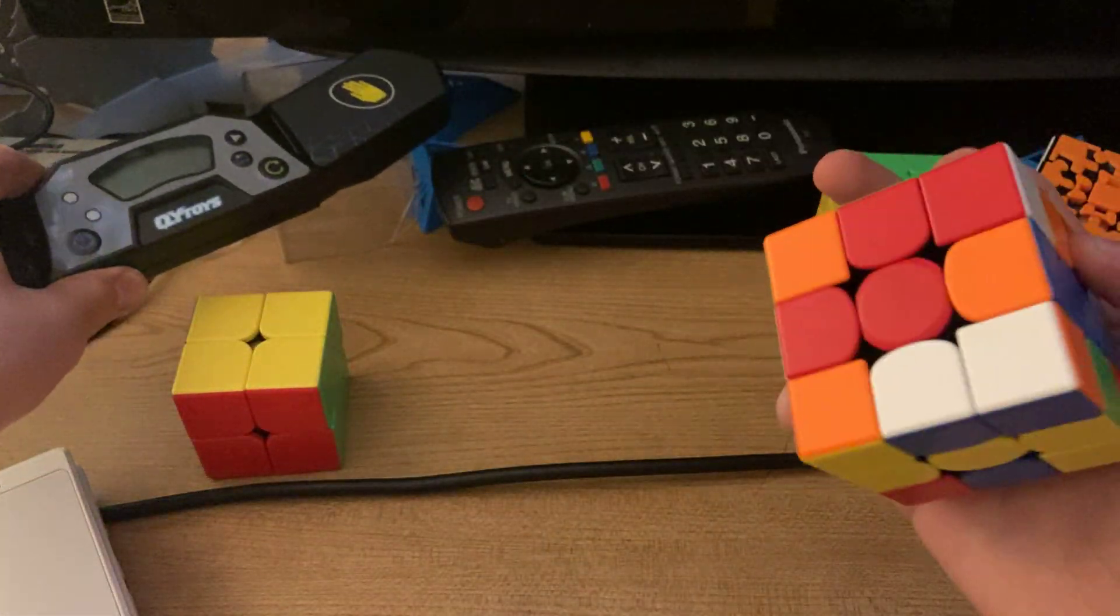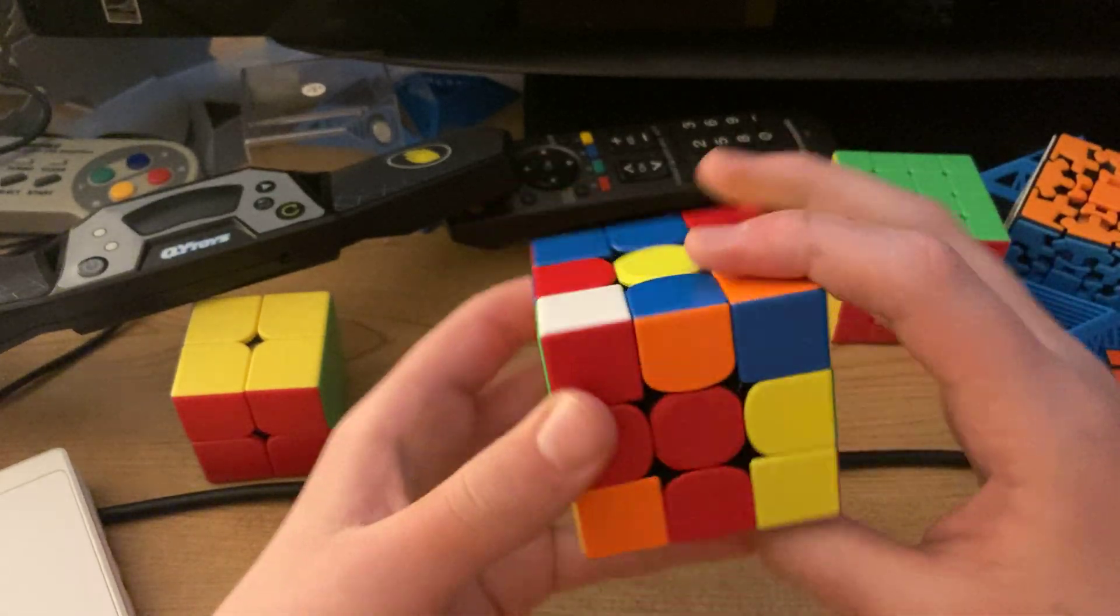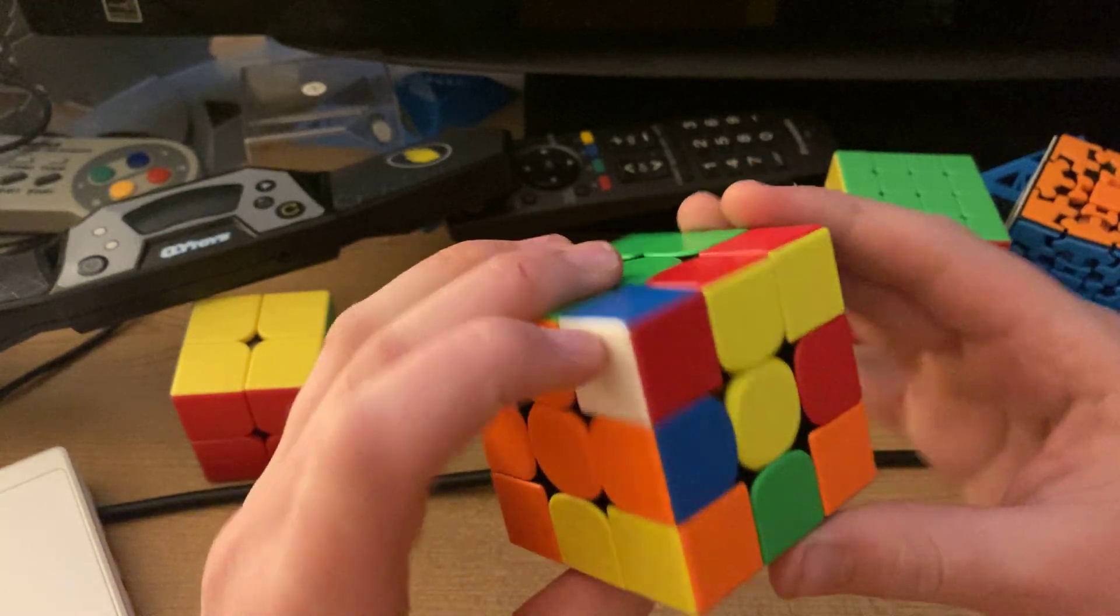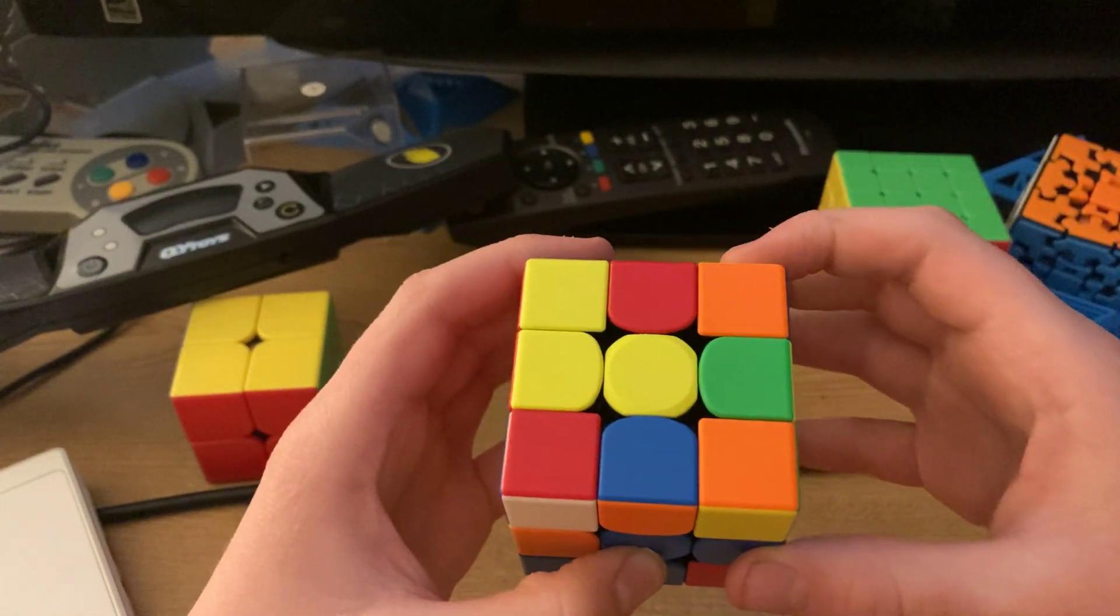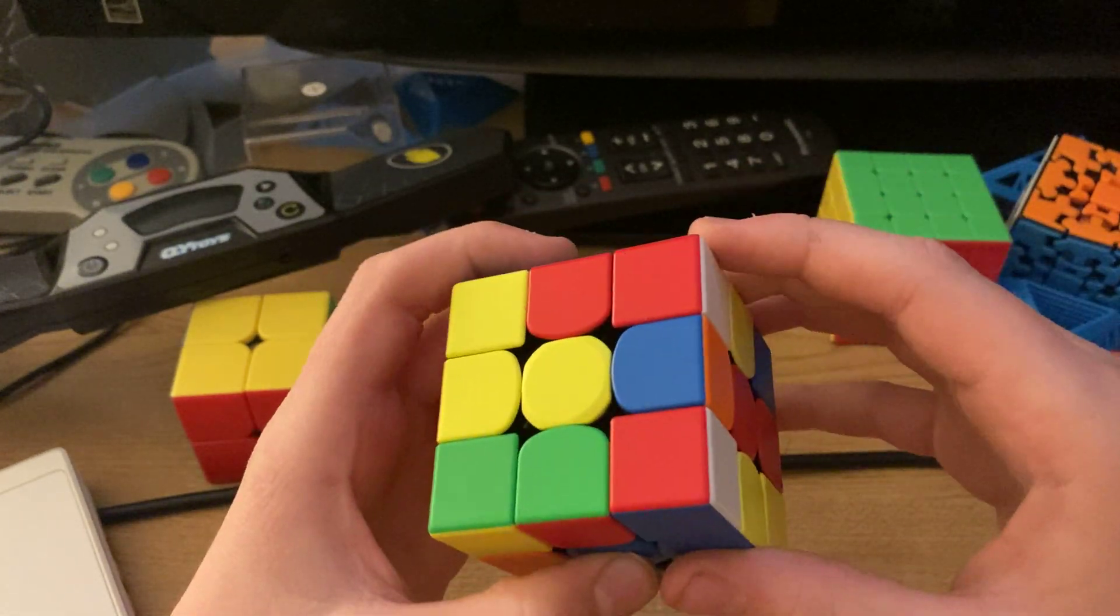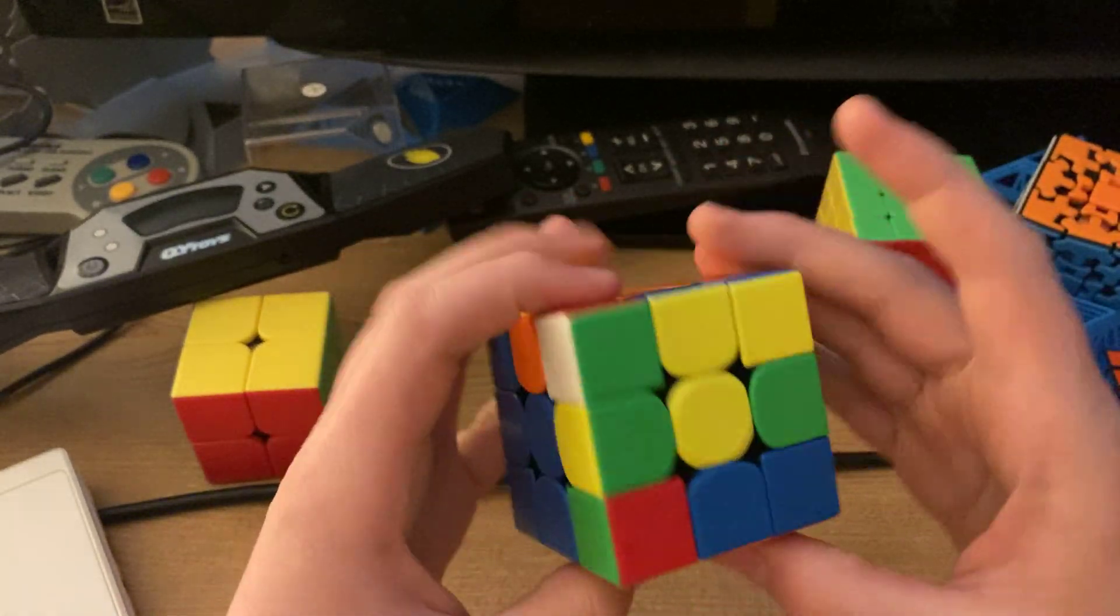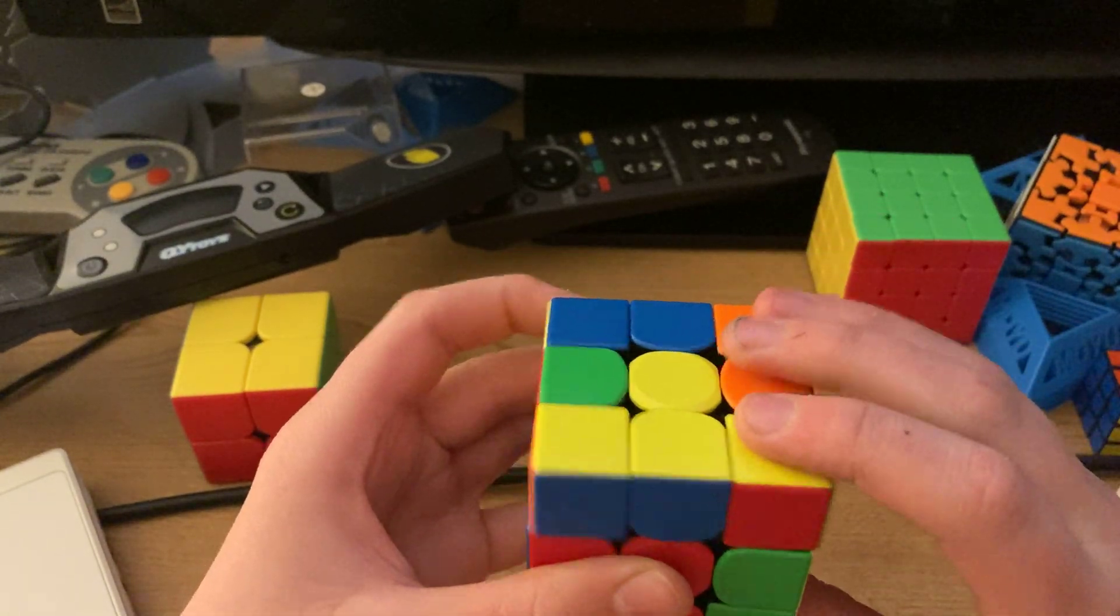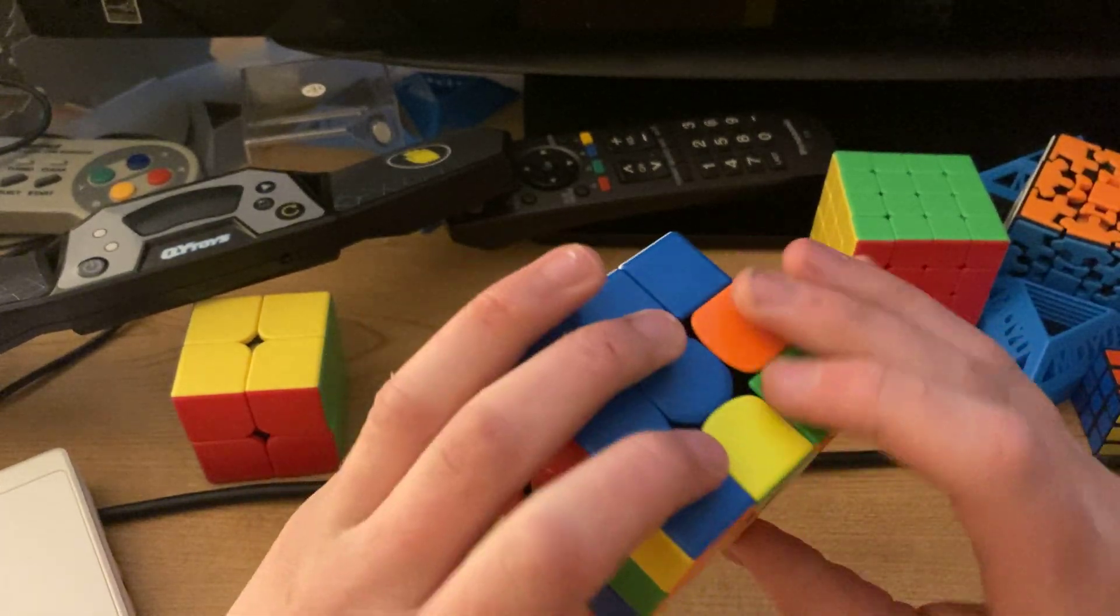I'm just gonna practice F2L. This is a pair, this pair has to get inserted like this. And then turned up like this so I have two pairs now. This pair, oh okay, but then that destroys that pair.